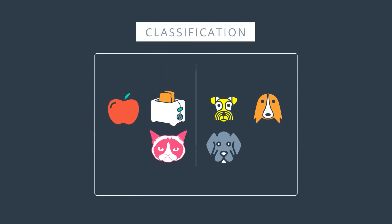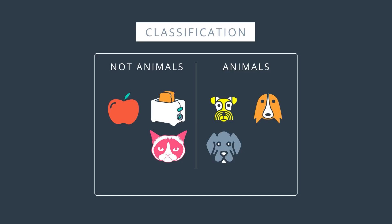Let's look at how overfitting and underfitting can occur in a classification problem. Let's say we have some data we need to classify. The ones on the right are dogs and the ones on the left are anything but dogs. Now what if we use the rule that the ones on the right are animals and the ones on the left are anything but animals? That solution isn't good — it's too simple and doesn't get the whole dataset right. It misclassifies this cat over here, since the cat is an animal. This is underfitting.